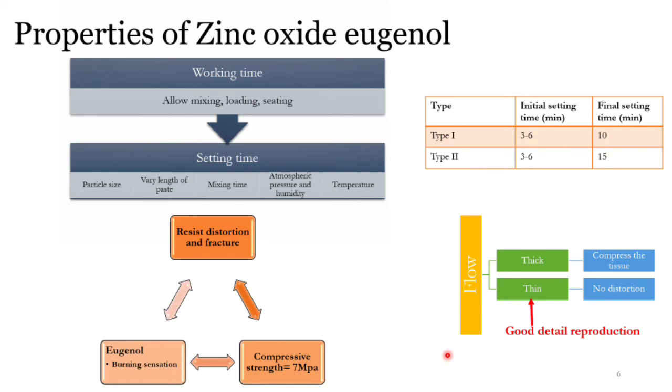Eugenol has a problem with tissue compatibility. In some people it causes severe burning sensation as it's a tissue irritant. In such cases, a non-eugenol paste needs to be substituted.